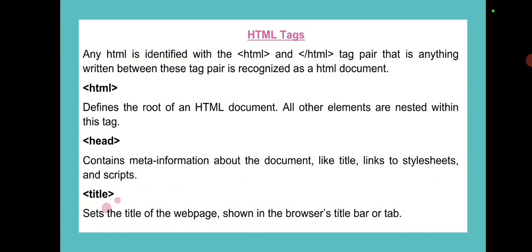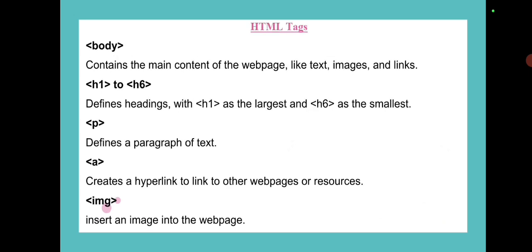The body tag contains the main content of the web page, such as text, images, links, videos, or whatever you want to show. Then h1 to h6 are heading tags. h1 is the largest heading, followed by h2, h3, h4, h5, and h6, where h6 is the smallest heading.